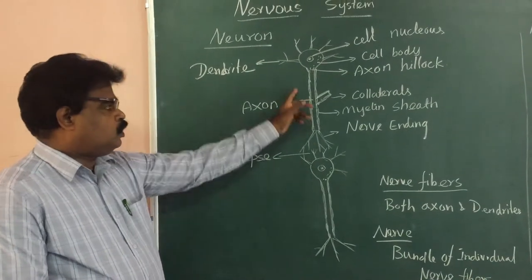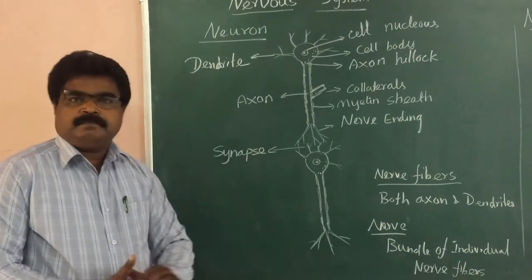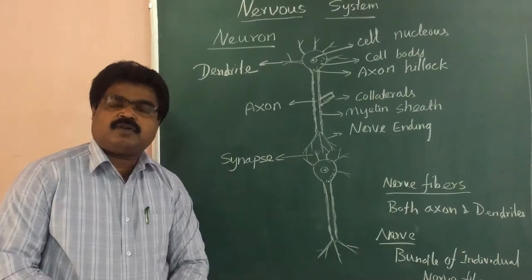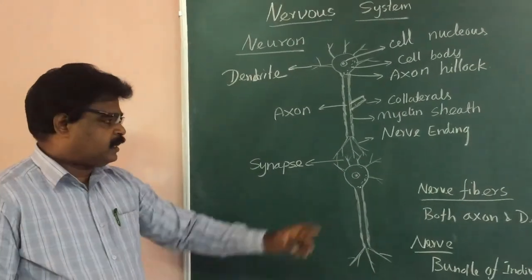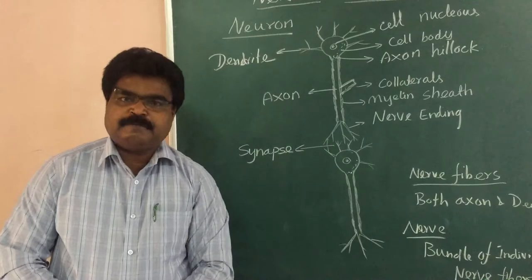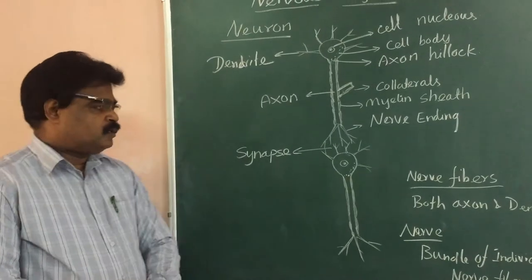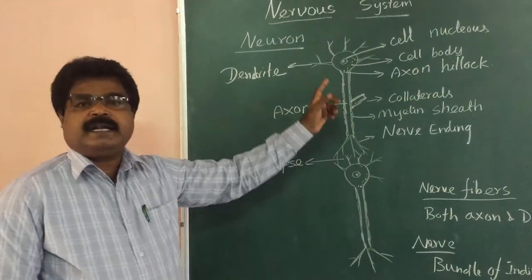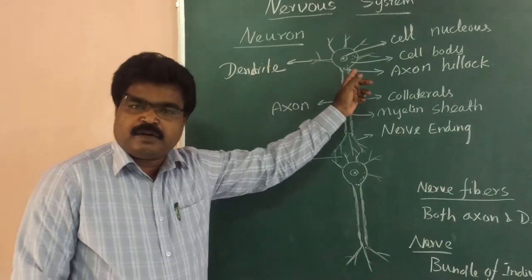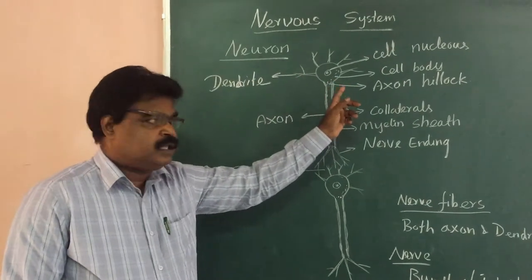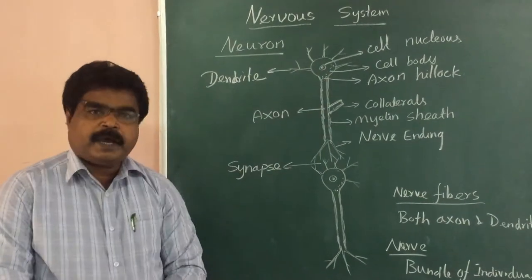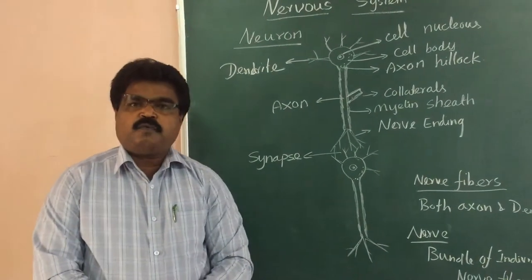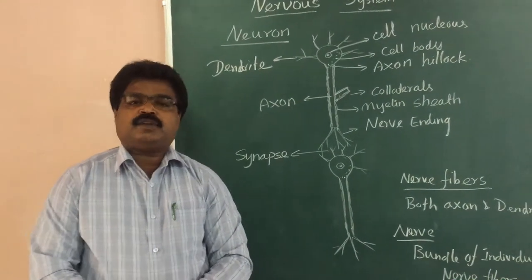In this diagram, two neurons are shown. The interconnection of two neurons is called a synapse. Both the axon, the long transmitting fiber, and the dendrites, where inputs are given into the neuron, are together called nerve fiber. The bundle of individual nerve fibers is called a nerve.